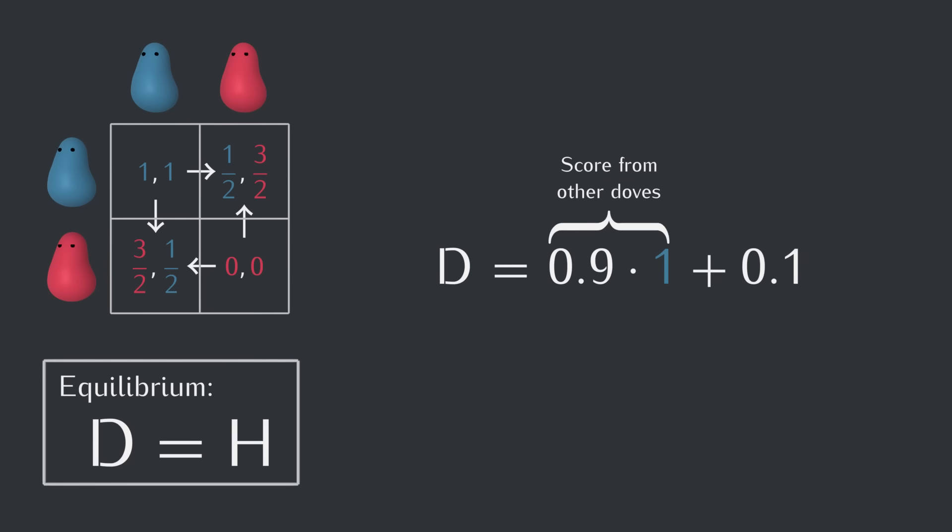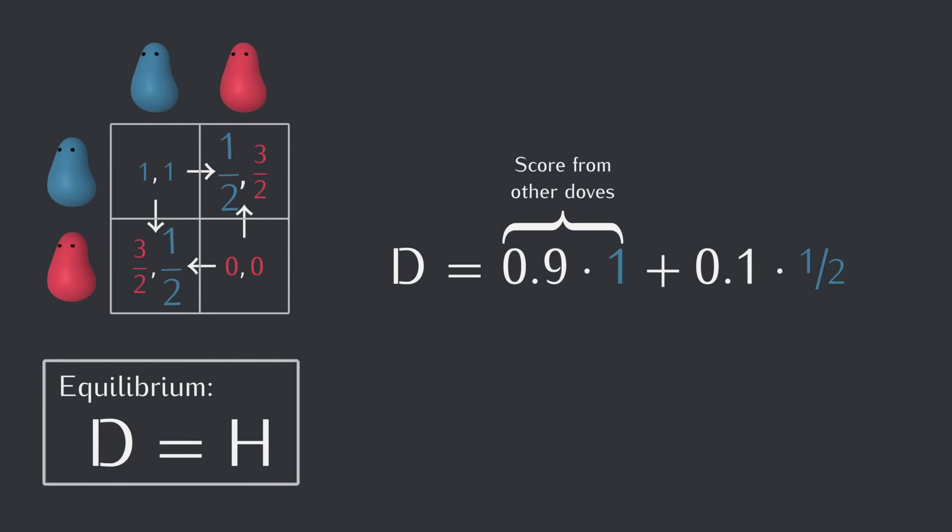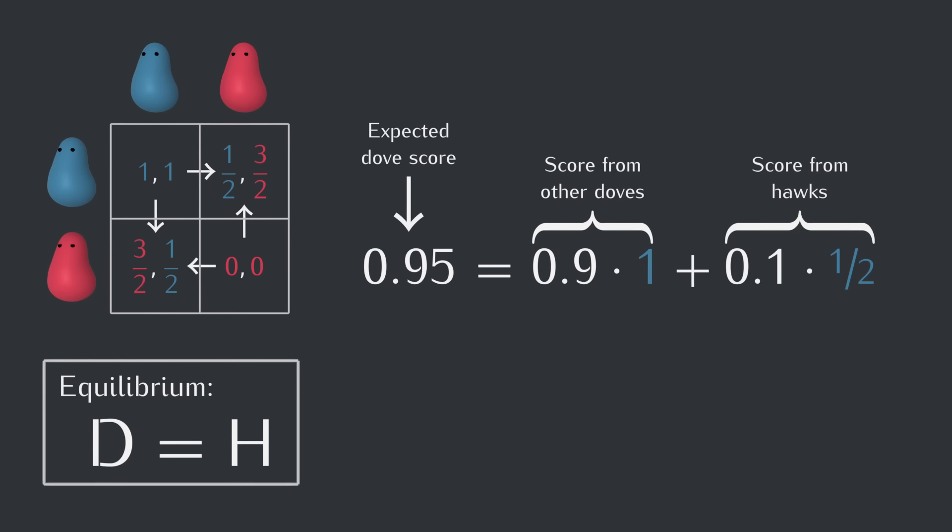And a dove also has a 10% chance of facing a hawk, right? That's just the rest of the creatures, in which case it only gets a half a food. So overall, when a dove runs into another creature when the rest of the population is 90% doves, it'll come away with 0.95 food on average.